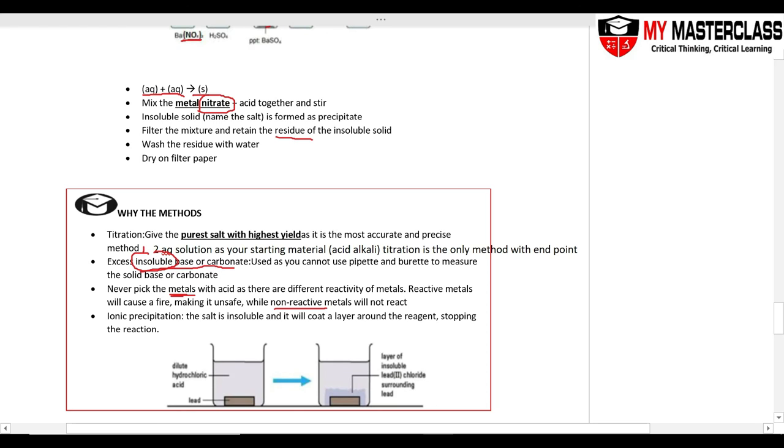Last but not least, your ionic precipitation. Why do I choose ionic precipitation? Because this salt is insoluble, I cannot pick the excess method as it will coat a layer around the reagent and stop the reaction.